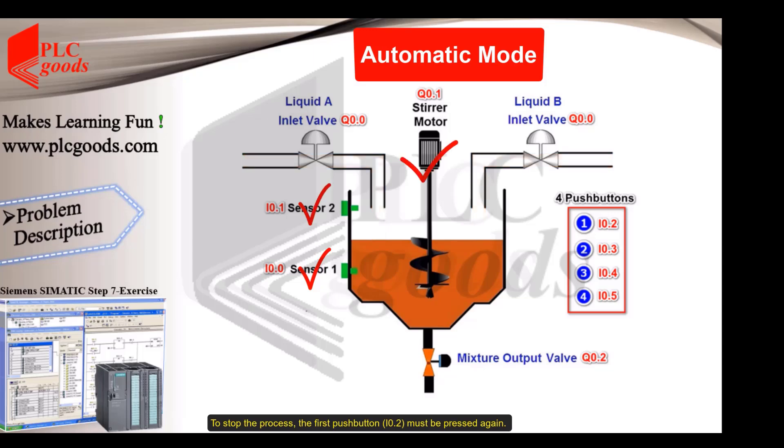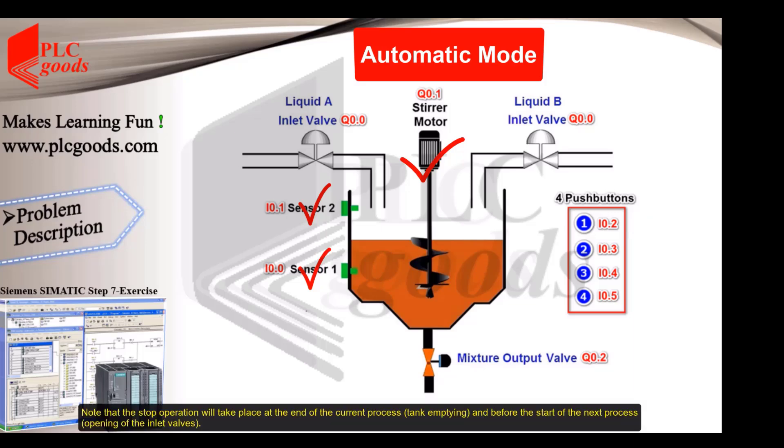To stop the process, the first push button or I0.2 must be pressed again. Note that the stop operation will take place at the end of the current process and before the start of the next process, the opening of the inlet valves.